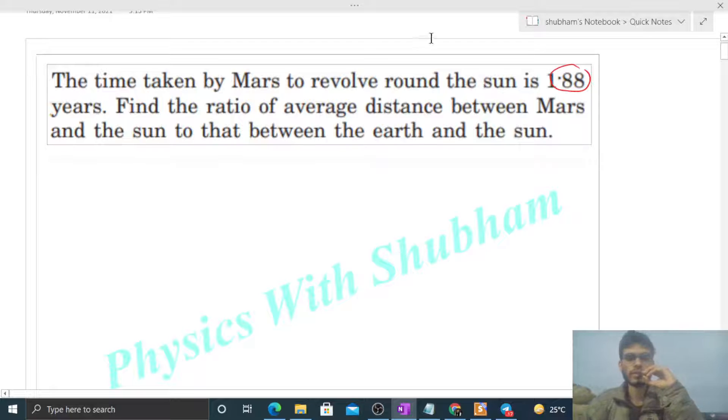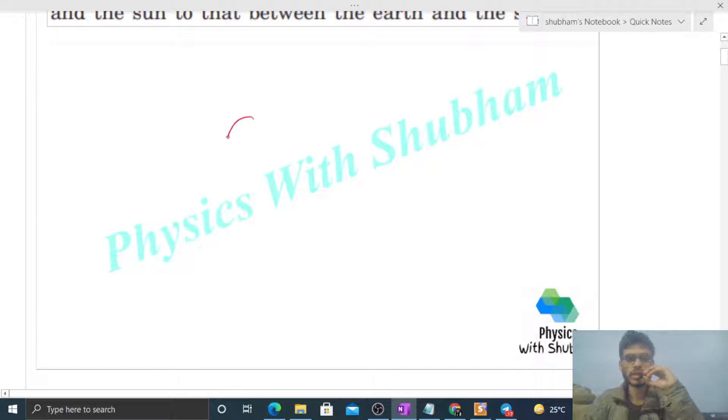So I say we have the Sun here, and here is Earth, and here is Mars. This is the orbit of the Earth and this is the orbit of Mars.